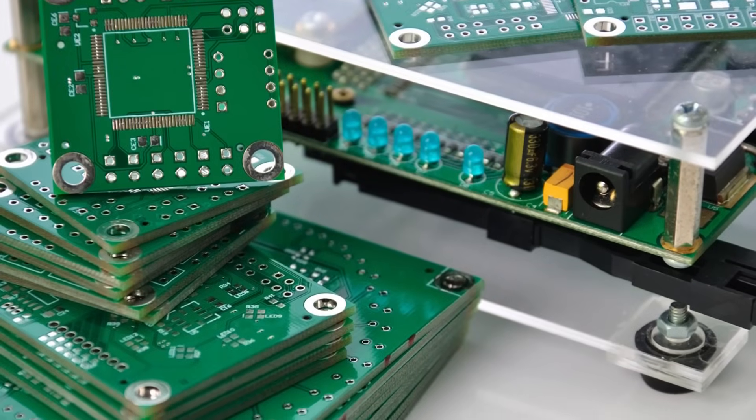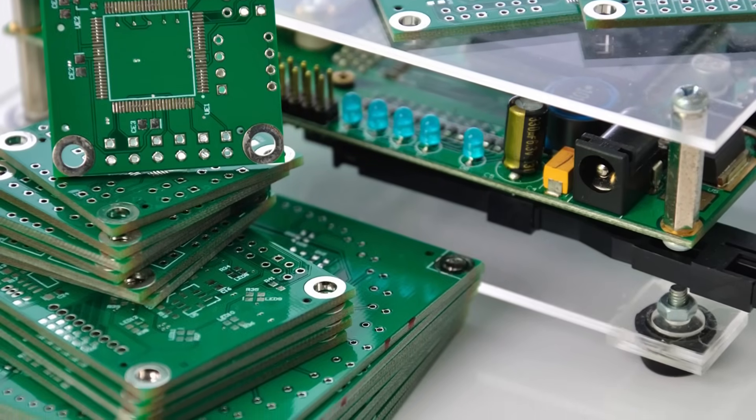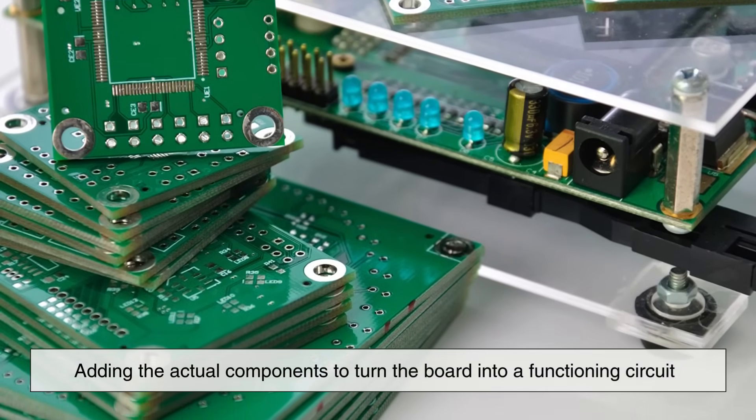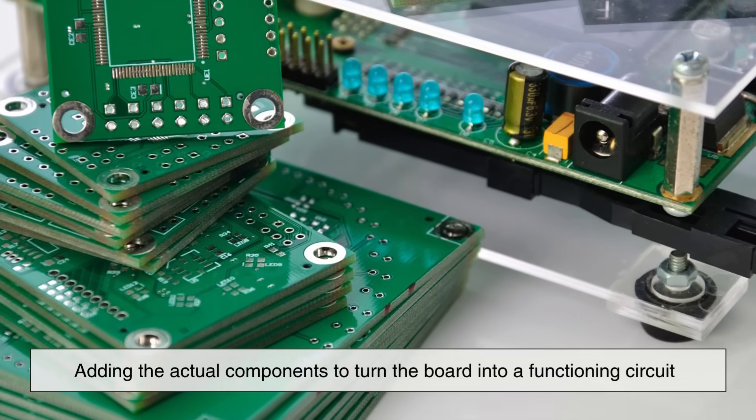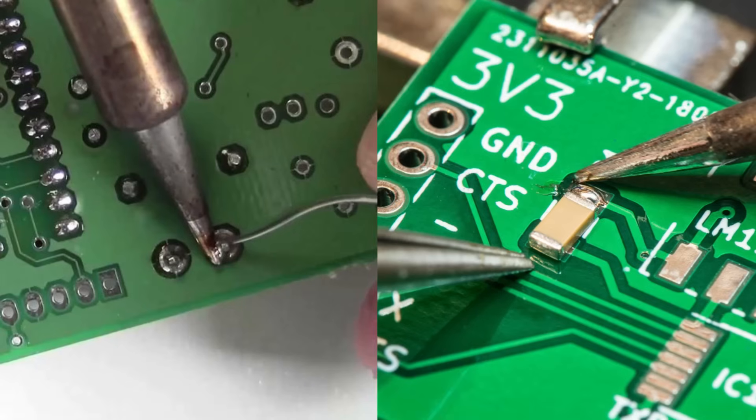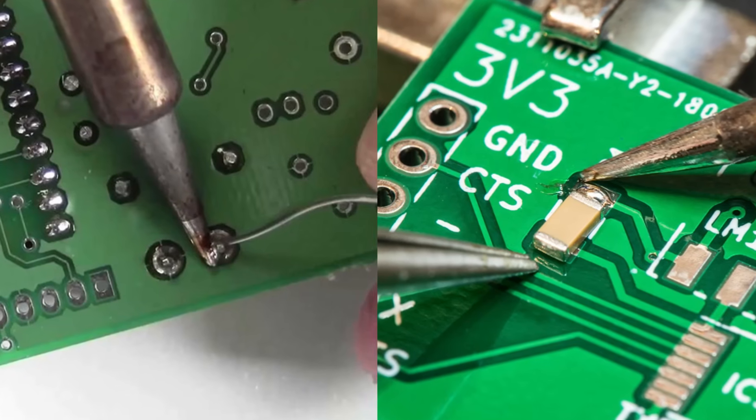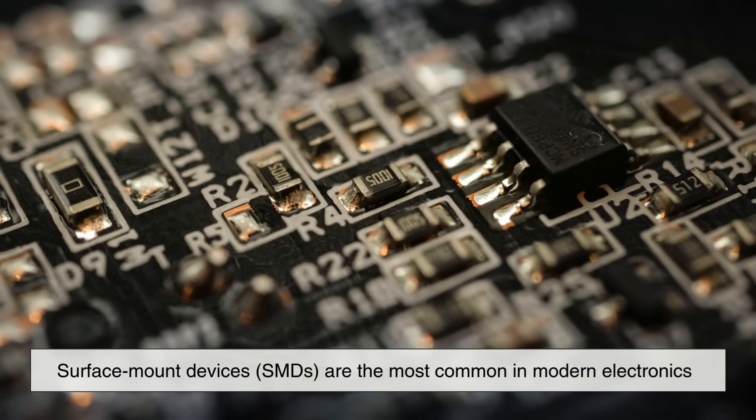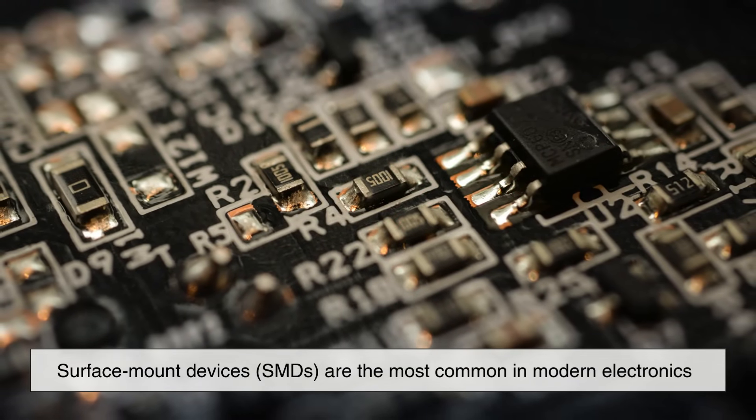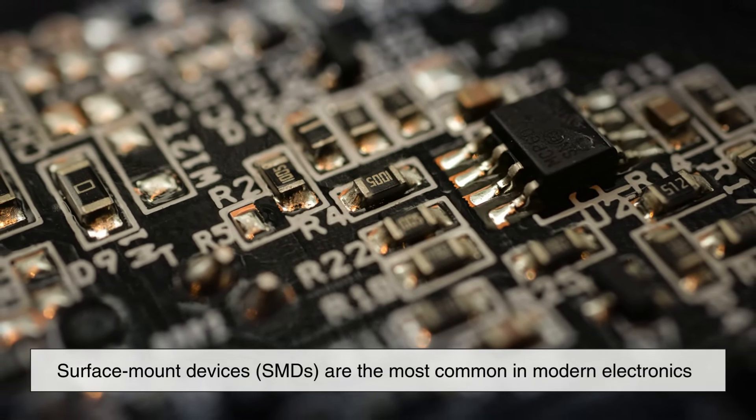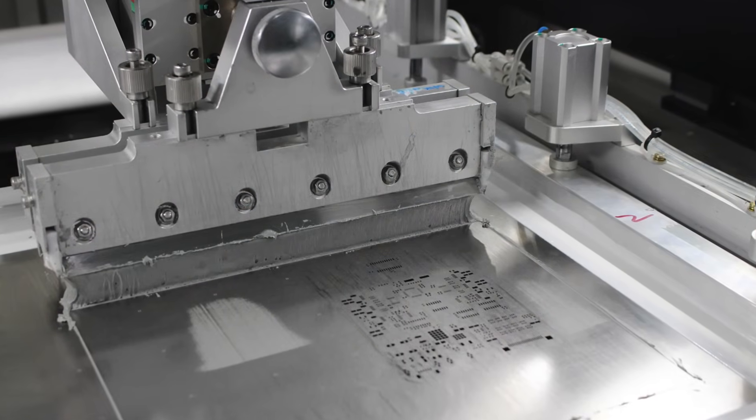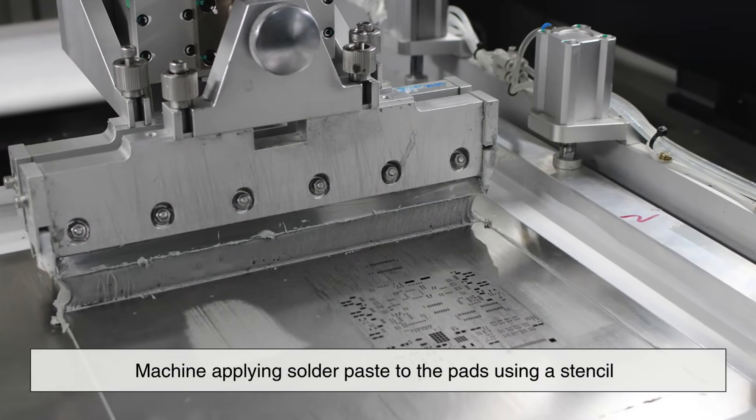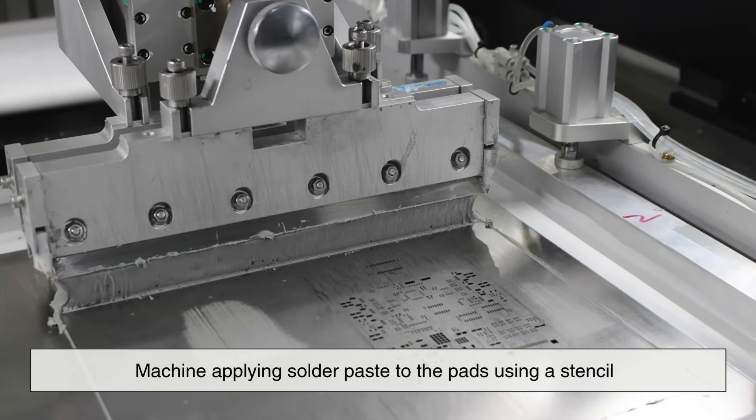Once the bare PCB is complete, it's time for assembly, adding the actual components to turn the board into a functioning circuit. There are two main types of components: through-hole and surface mount. Surface mount devices, or SMDs, are the most common in modern electronics. Assembly begins with a machine applying solder paste to the pads using a stencil.